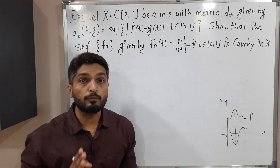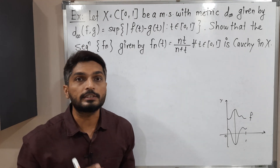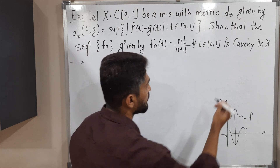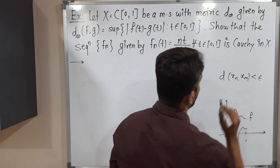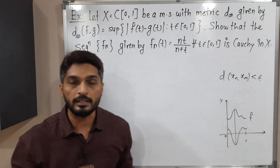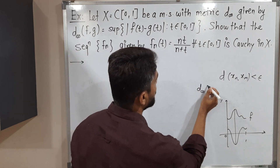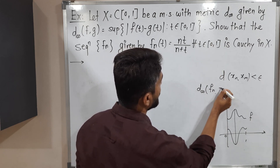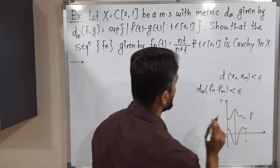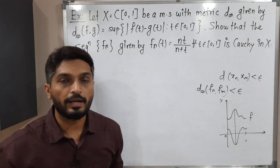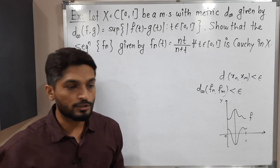So this is a given metric space and we have to prove that this sequence of functions Fn(t) is a Cauchy sequence. What is the definition of a Cauchy sequence? So D(Xn, Xm) less than epsilon — this is the basic definition of a Cauchy sequence. Here in this example, we will try to prove D∞(Fn, Fm) less than epsilon. That is our target.